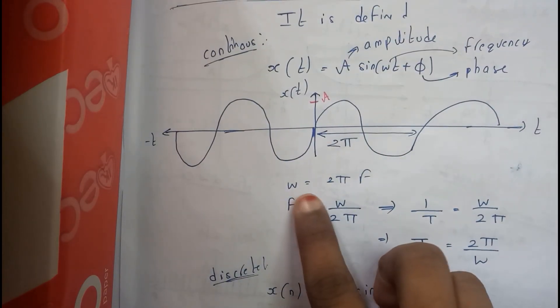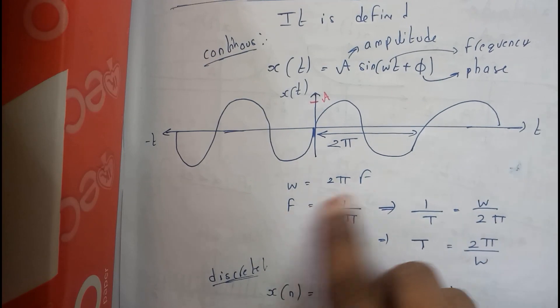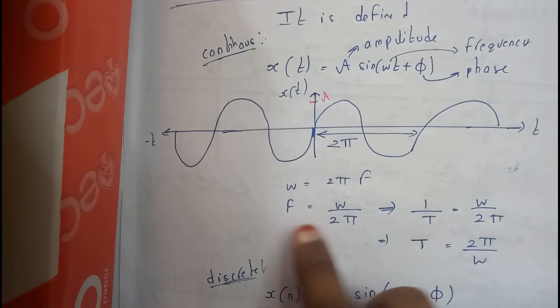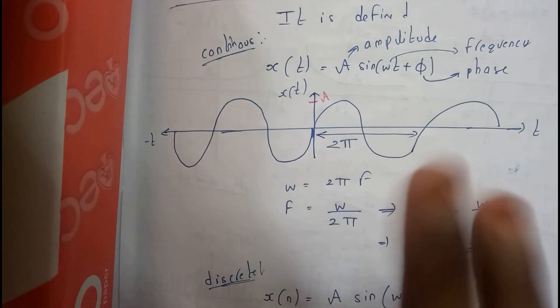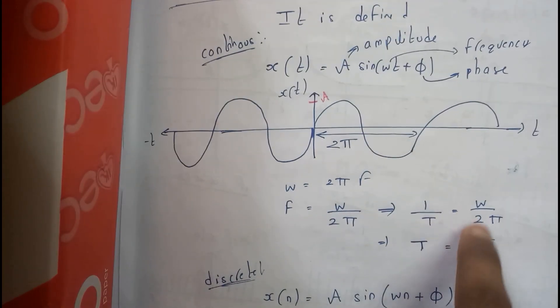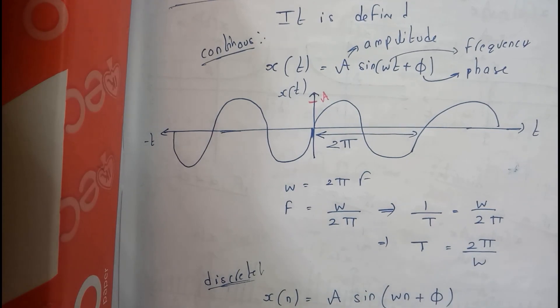Okay, where we already know that omega equals 2 pi f. F equals omega by 2 pi. That implies we also know that f is nothing but 1 by t. Frequency is always inversely proportional to time. So 1 by t equals omega by 2 pi, t equals 2 pi by omega.